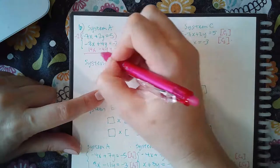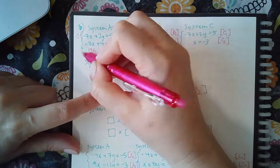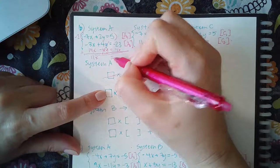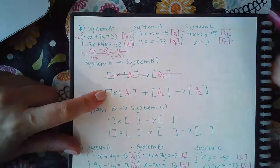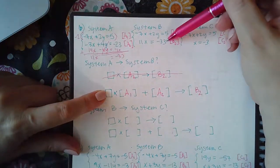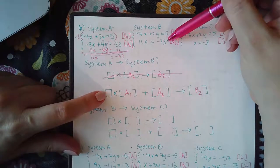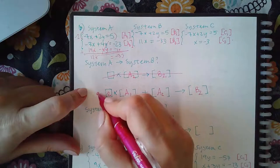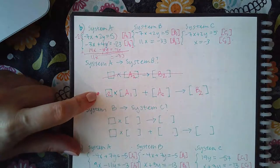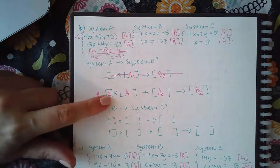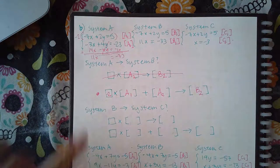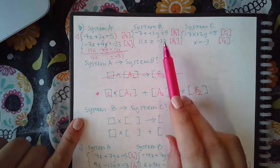Combining those two lines together, the y terms cancel and I get 11x equals negative 33, which is exactly what appears in system B's second equation. So I multiplied the first line by negative 2 — that's the option I select, and negative 2 is the number needed.